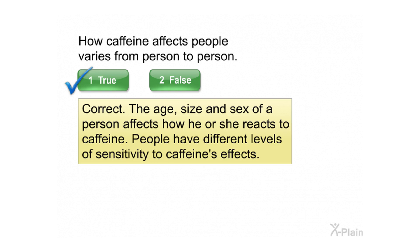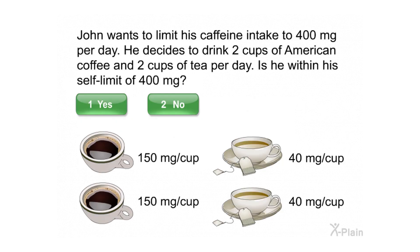Correct! The age, size, and sex of a person affects how he or she reacts to caffeine. People have different levels of sensitivity to caffeine's effects. John wants to limit his caffeine intake to 400 milligrams per day. He decides to drink two cups of American coffee and two cups of tea per day. Is he within his self-limit of 400 milligrams? Select yes or no.